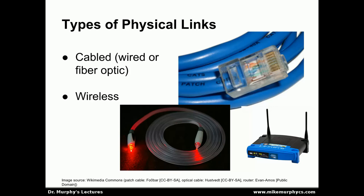There are many types of physical links. We can generally categorize these links into either cable links or wireless links. A cable link has some kind of a cable running between the devices in the network. Here I have a patch cable — a category 5 patch cable — a type of cable that can be used with wired Ethernet networks, using eight pieces of copper wire to transmit data. Here I have an example of a fiber optic cable, which allows us to transmit light through a flexible piece of glass or plastic. And here I have an example of a wireless device that uses a couple of antennas to transmit data over radio waves.